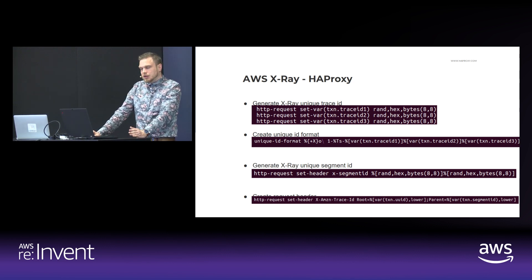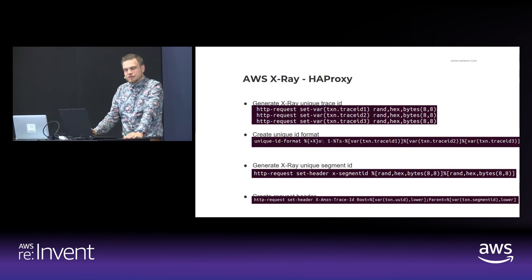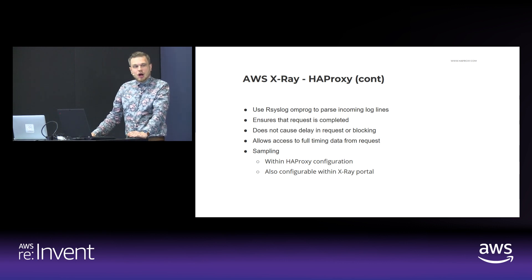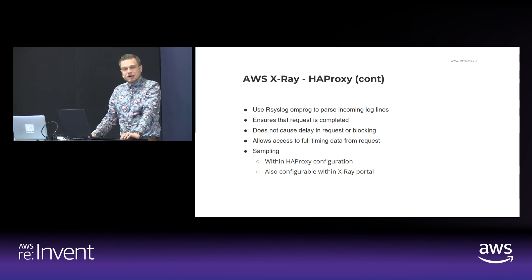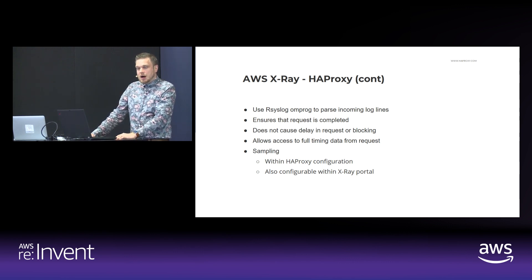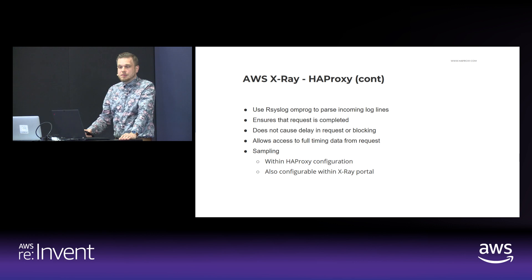Next, we create a segment ID similar to the trace ID, and this will be used as the parent ID, which will allow sub-segments to associate themselves with it. Finally, we pass the X-Amazon-Trace-ID HTTP header to the application server. To bring everything together, we also use syslog in the process — specifically the omprog module within our syslog — which allows us to create our own application that syslog will pipe data to. This ensures that the request is completed and gives us access to the full timing data. It also ensures no delays or blocking occur to the request while X-Ray is processing this data. We can also do sampling of the data, deciding to send only certain logs at a random sample to X-Ray, using either the HAProxy configuration directly or the AWS X-Ray portal.